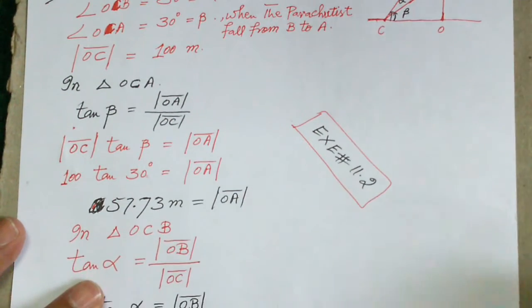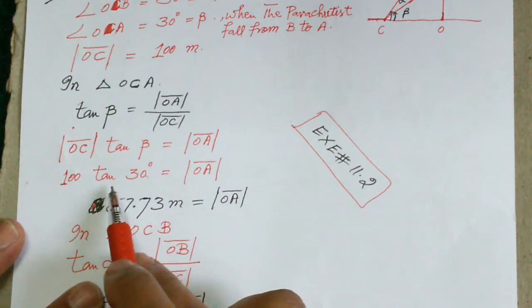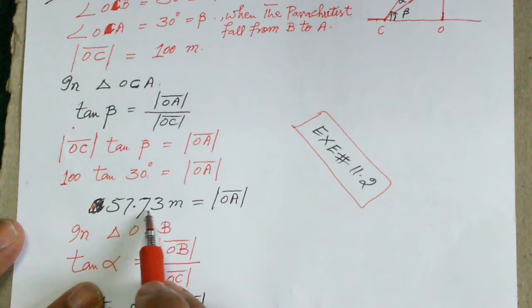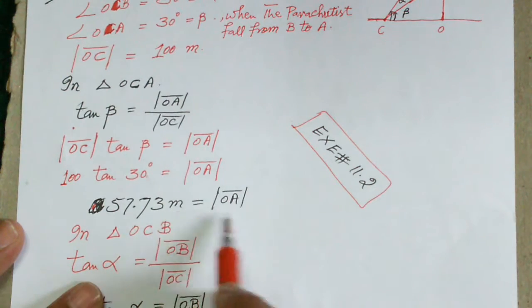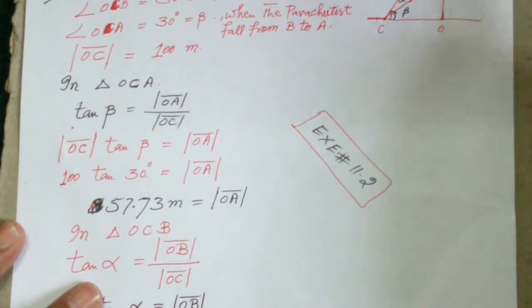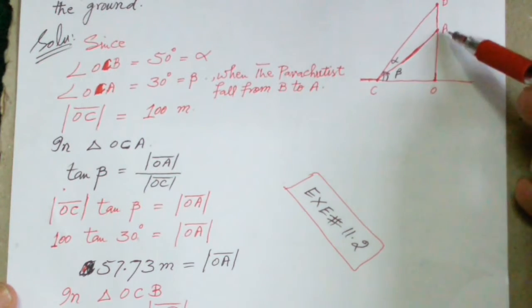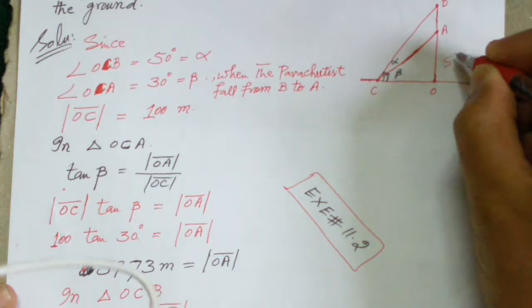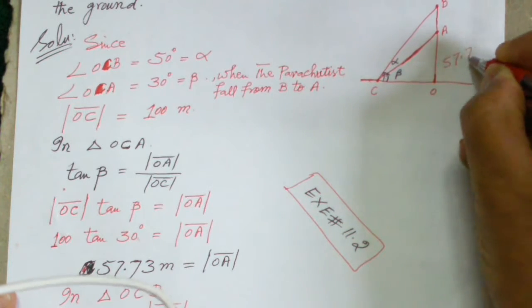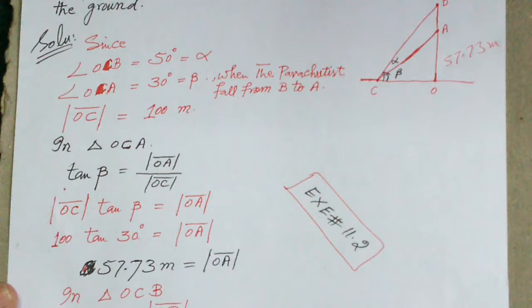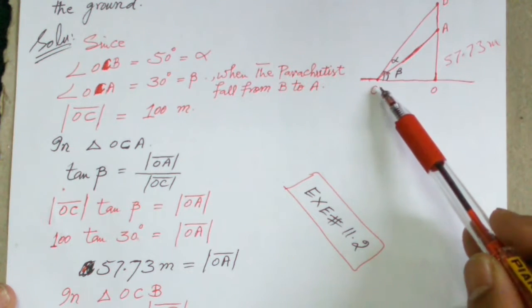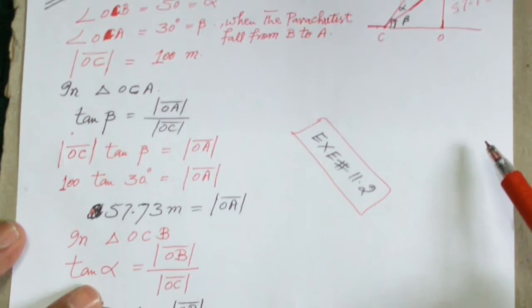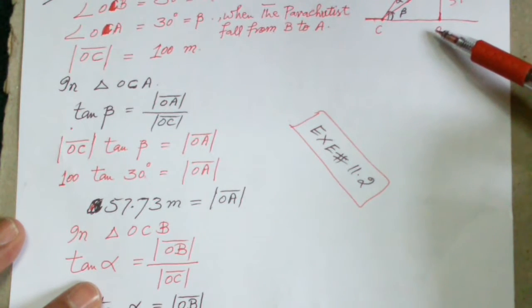Calculating: tangent of 30 degrees multiplied by 100 gives us 57.73 meters. Therefore OA is equal to 57.73 meters.